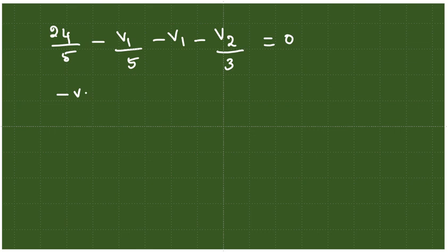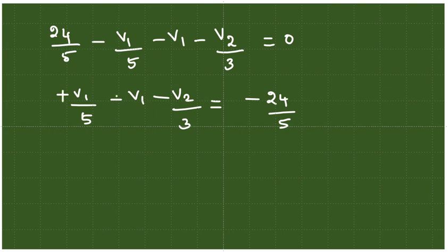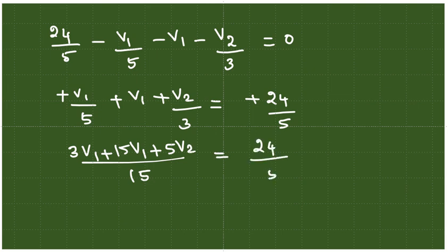I can rewrite this as V1/5 minus V1 minus V2/3 equals minus 24/5. Taking common denominator as 15, this becomes 3V1 plus 15V1 plus 5V2 equals 24 times 3, which is 72. So this equation is 18V1 plus 5V2 equals 72. This is our first equation.